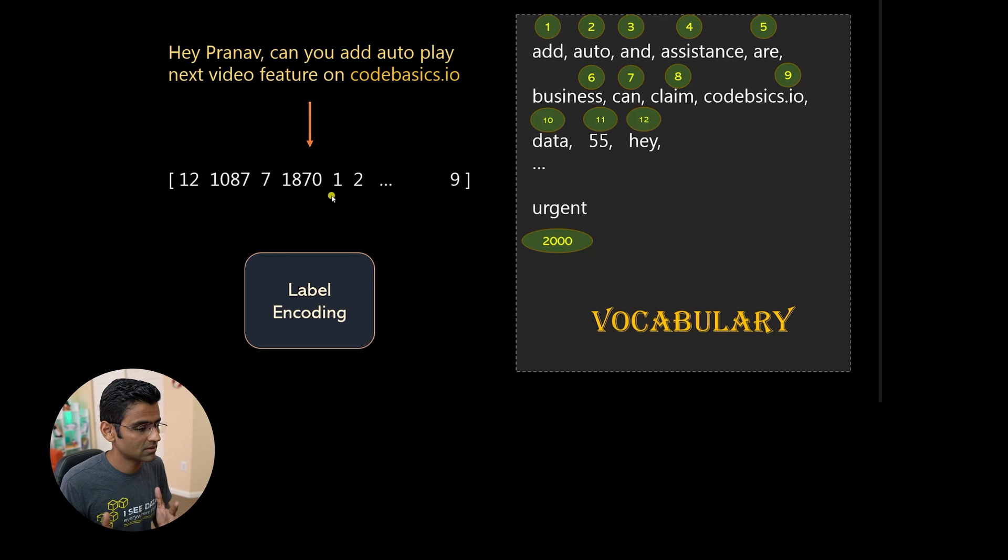And this is a very primitive way of representing text as a vector. It is called label encoding. You might have encountered this term label encoding if you have done machine learning. This is a very basic approach.